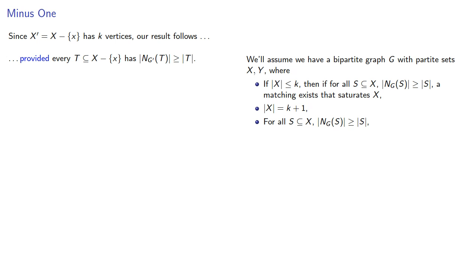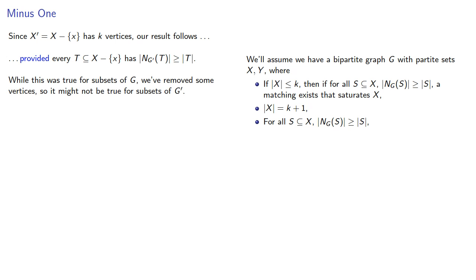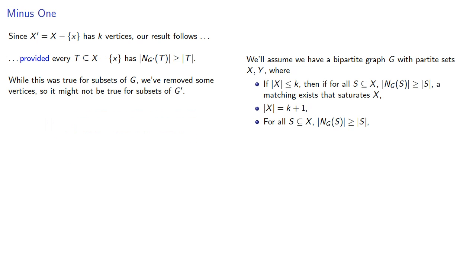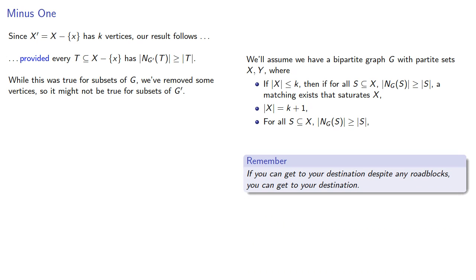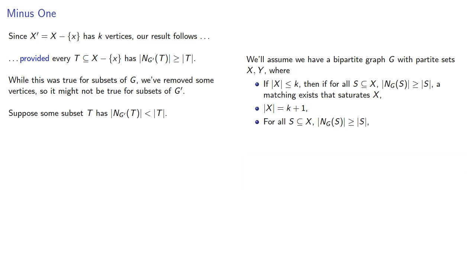The important thing to keep in mind is that while this was true for subsets of g, we've removed some vertices, so it might not be true for subsets of g prime. A useful idea in proof: if you can get to your destination despite any roadblocks, you can get to your destination. So if this road is blocked and we can still get there, we can prove our result. Suppose there is some subset t where the neighborhood is smaller than t.